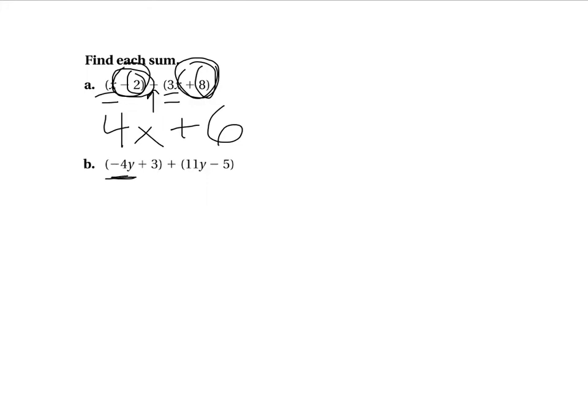Like term here, like term here, here, and here. So I'm taking a negative 4y, and I'm going to add it to 11y. So negative 4y plus 11y gets me a 7y, positive 3, subtract 5, would get me minus 2. So this is how we add linear expressions.